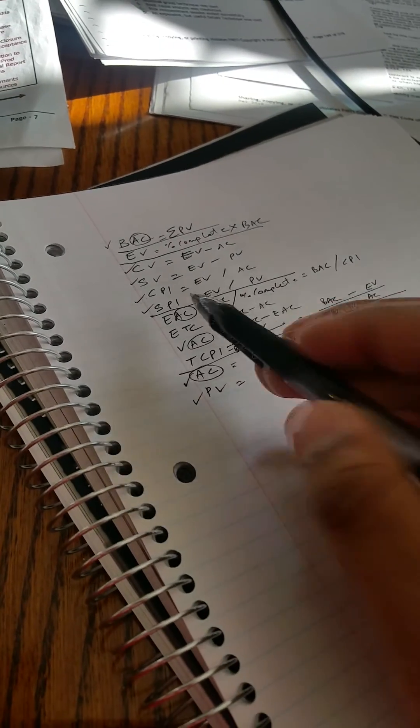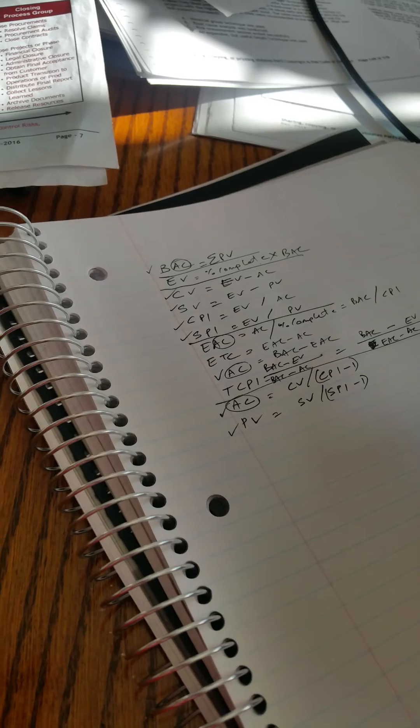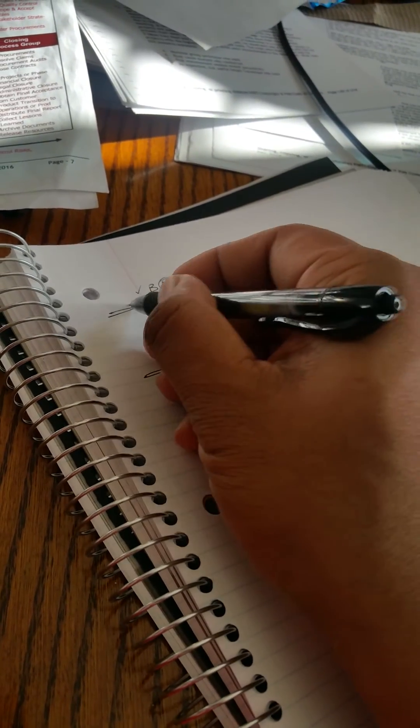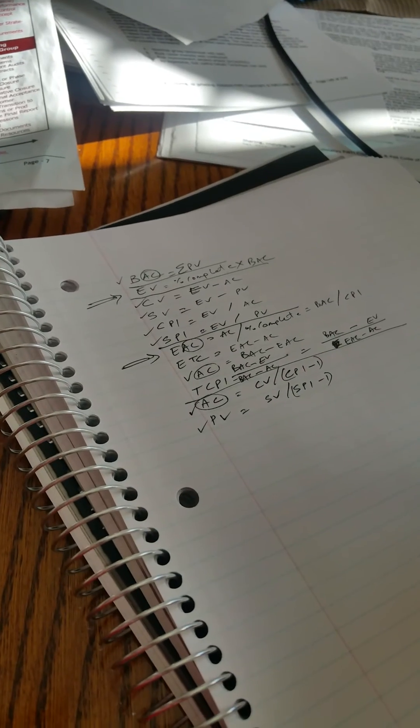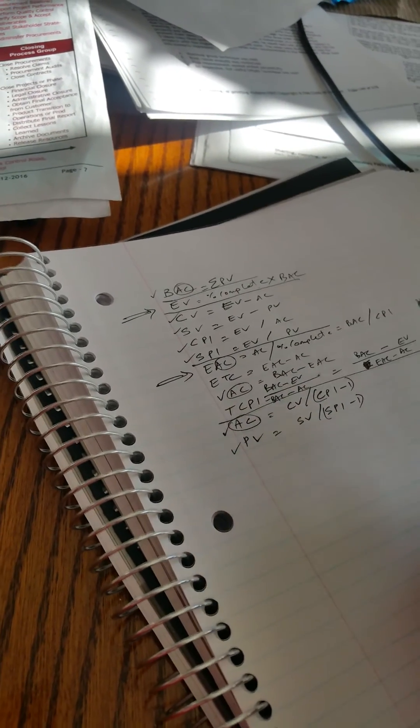So the idea here is, you know, do the quick approach first to see what you can memorize, and then leave these two equations. For me, they happen to be the more critical ones that didn't really follow a rhyme that I was trying to look for.